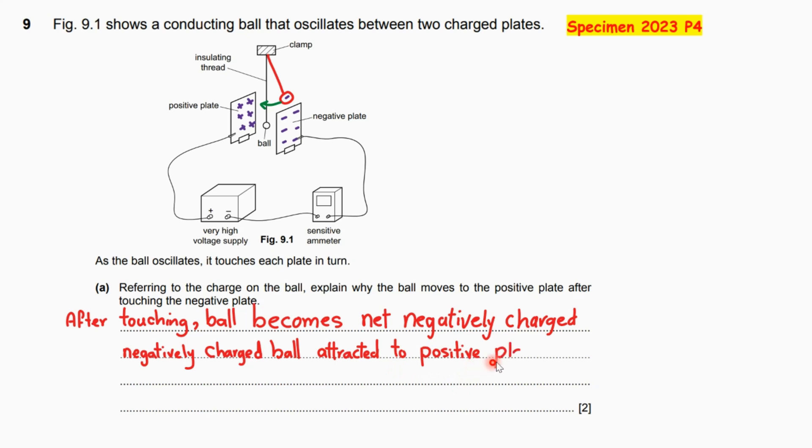If you want to say it's repelled the negative plate, it's okay. You'll get two marks here: one mark for showing the sign on the charge itself after touching the negative plate and the second one for saying the word which is attracted.